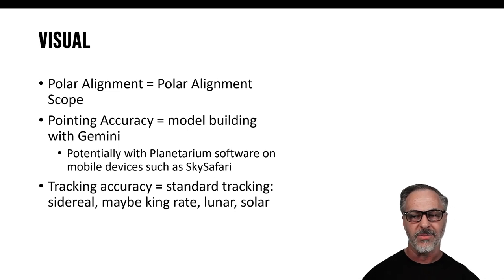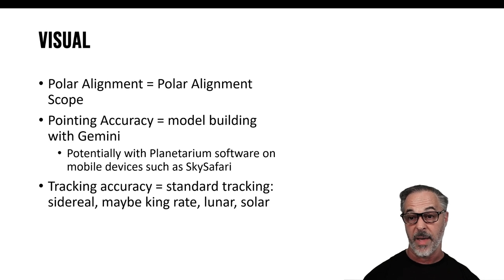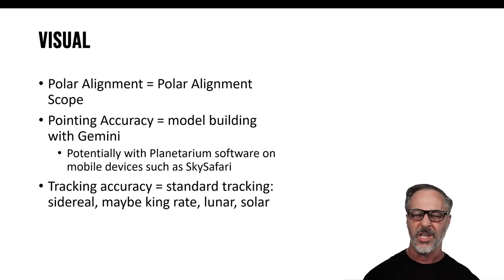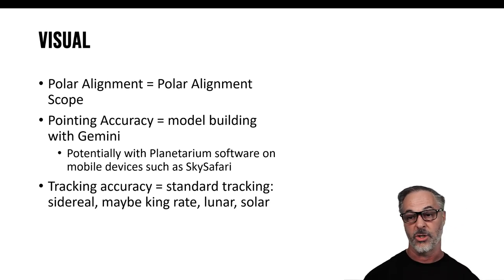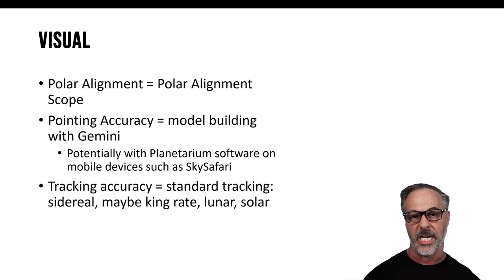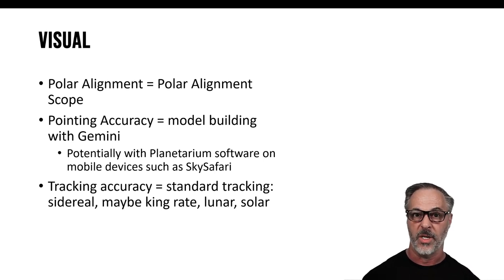When you're doing visual observing, tracking becomes less important — really all you're doing is running the mount at sidereal rate, unless you're observing the moon. Things like guiding and periodic error correction just really aren't that critical for visual observing. Basically, you're going to be doing sidereal tracking and that's really all you need to worry about in terms of tracking for visual observing.